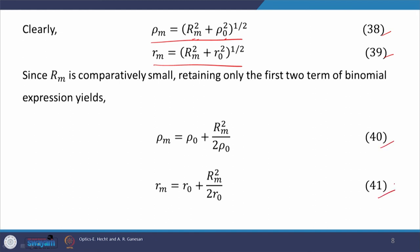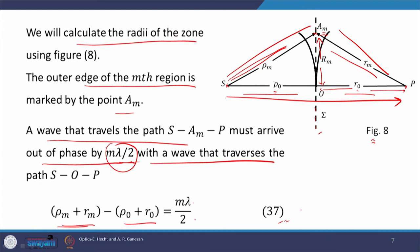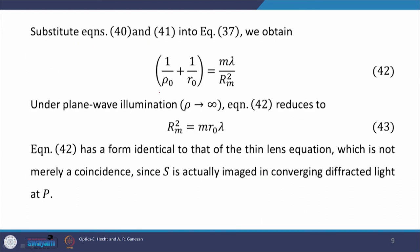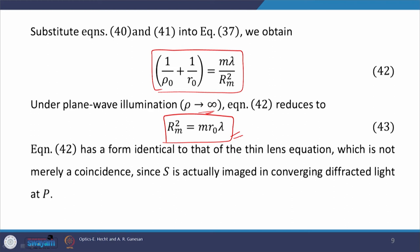Substituting equations 40 and 41 back into equation 37, we get the resulting expression. Now suppose instead of a point source, the zone plate is illuminated by a plane wave. For a plane wave, ρ tends to infinity, and therefore the equation reduces to: R_m² = m·R₀·λ. This tells us the radius of the zone plate — if we want to block the m-th zone, the radius would be equal to √(m·R₀·λ).